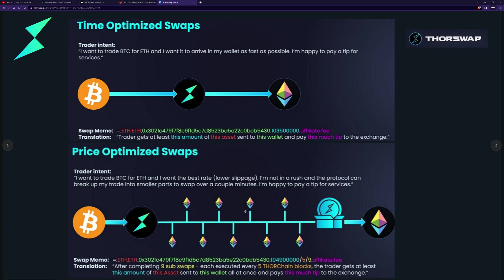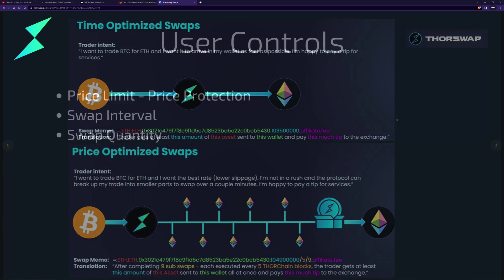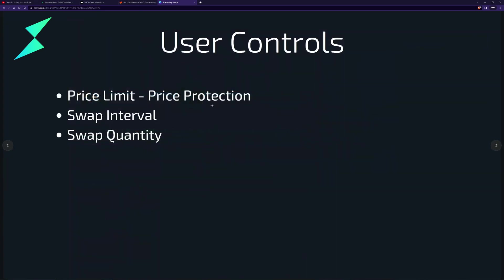The user controls three things: price protection — the minimum asset ratio, e.g. how much BTC to ETH you want, so if you want a minimum of 1.035 ETH out it works out the asset ratio and ensures you get that conversion on each mini swap, else it does a refund; the swap interval — e.g. five or ten blocks, which controls your time period (shorter interval means less time but less pool recovery); and the swap quantity — you can specify it yourself to control the time period, or let the network work it out for the most optimal price.